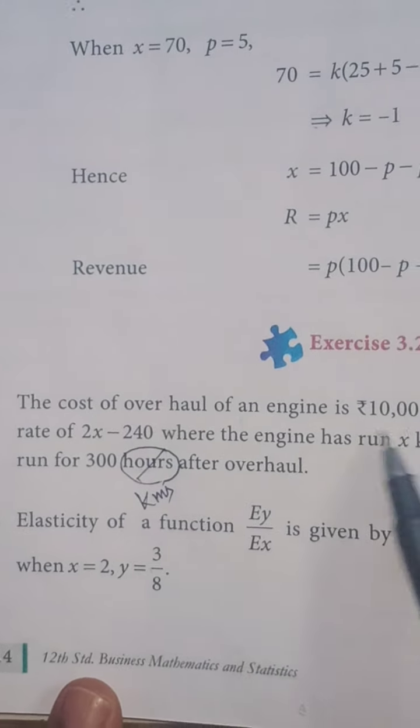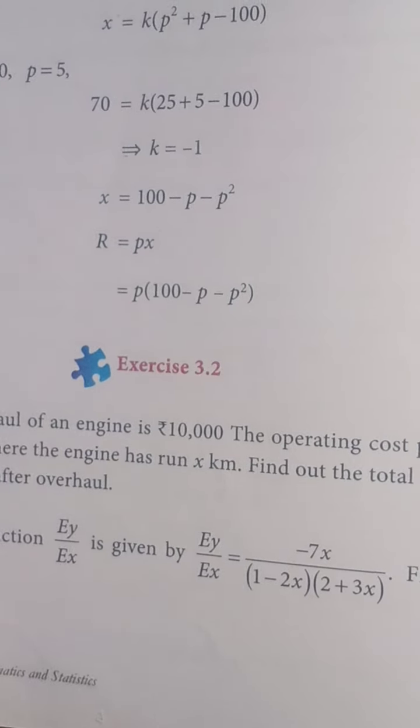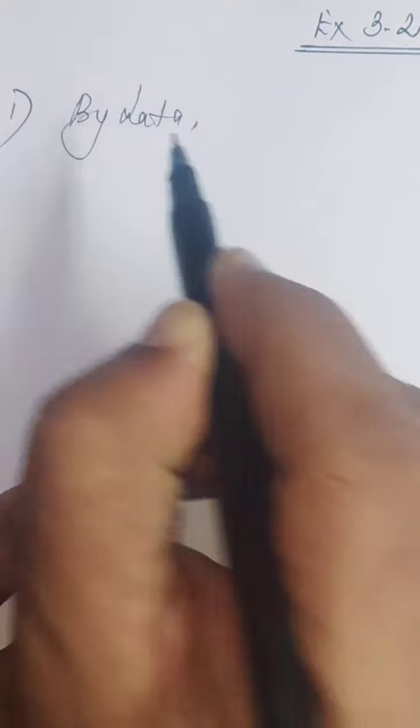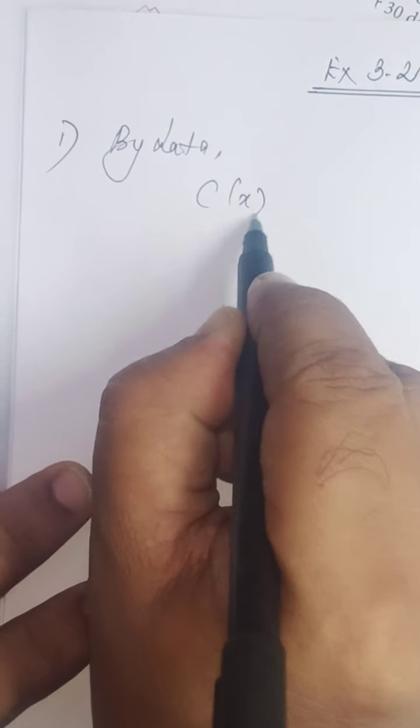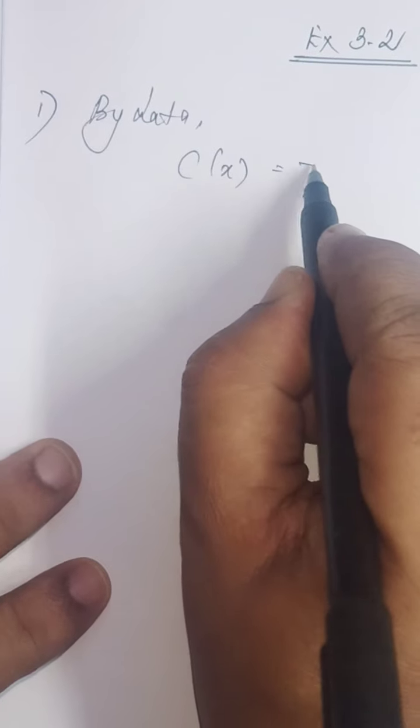So what is the overhaul cost? Overhauling. They have spent 10,000 rupees. By data, C of X, C refers cost, that is 10,000 rupees.